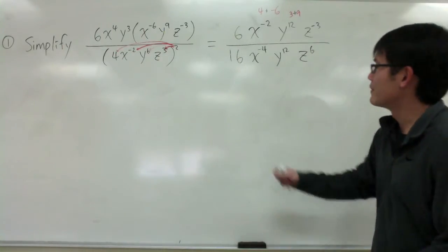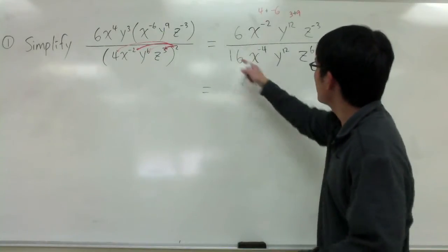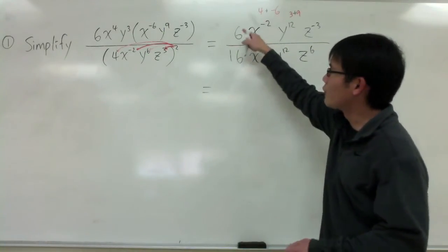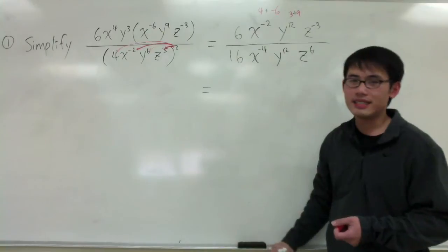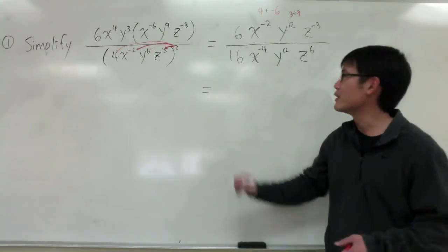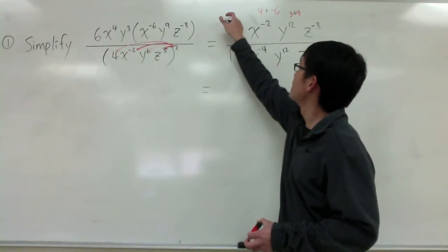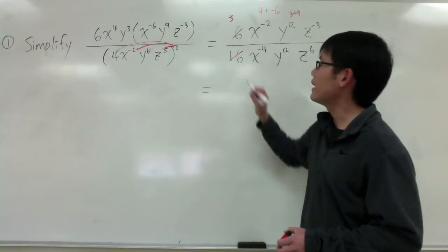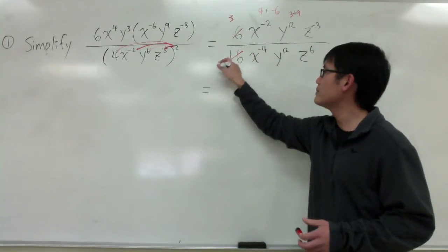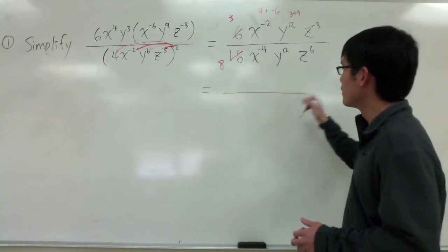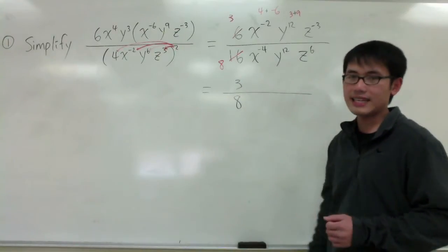Then, so far this is what we have. Now, I see that, first of all, I have 6 over 16. I can reduce that fraction. And I know that 2 goes into 6, 3 times. 2 goes into 16, 8 times. So then, I will have 3 over 8, like that.